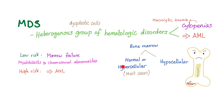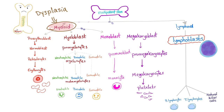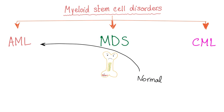The bone marrow can be normal or hypercellular in most cases, or hypocellular in a minority of cases. Remember: MDS means dysplasia plus cytopenia. Here is our famous slide of hematopoiesis — in myelodysplasia there is dysplasia of the myeloid lineage. MDS is an intermediate stage between normal and acute myeloid leukemia, so the entire purpose of treatment is to delay transformation into AML.